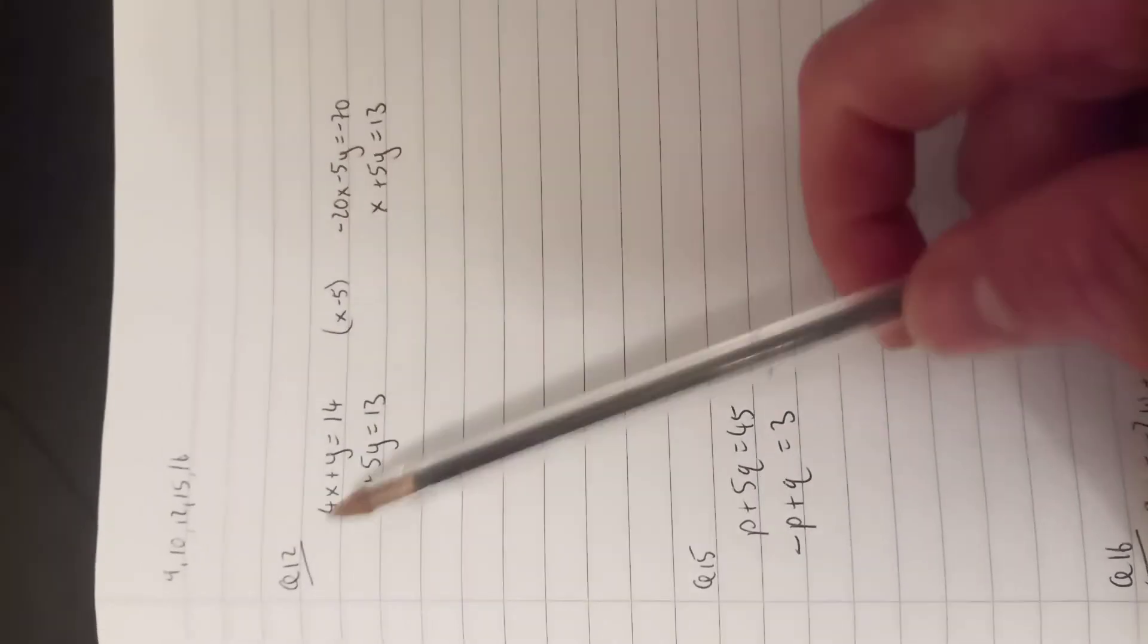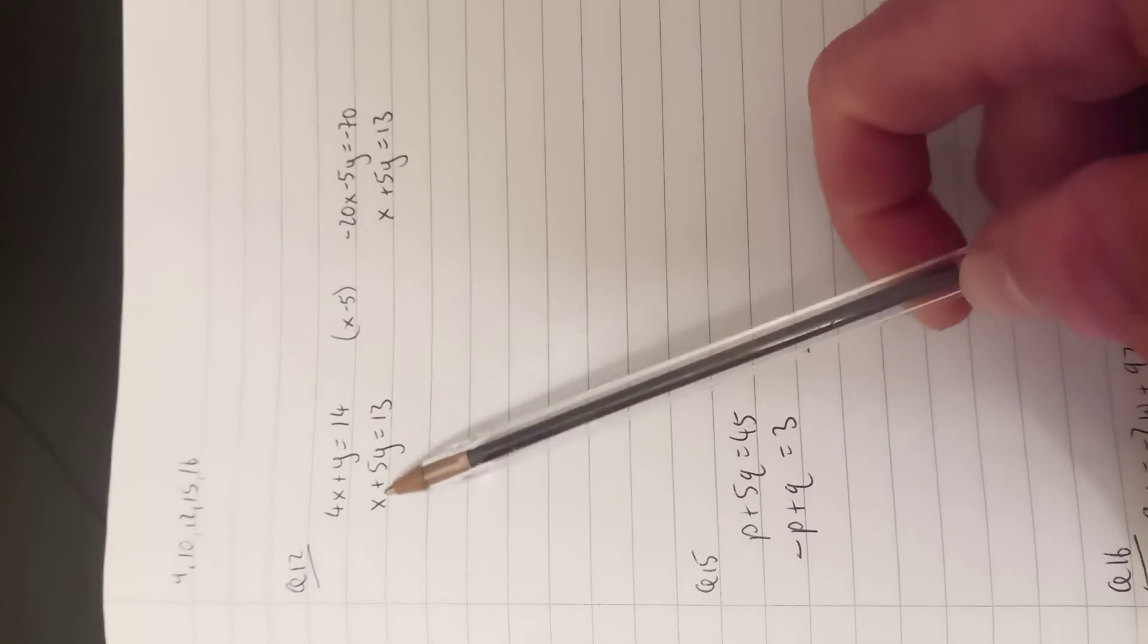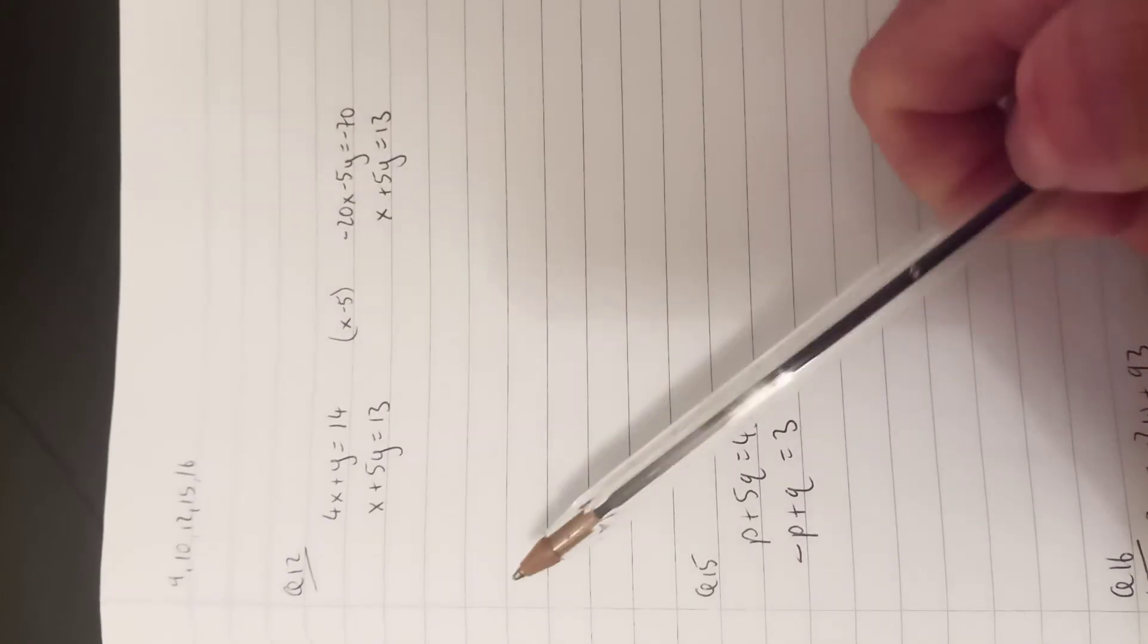Let's start with question 12. We'll solve the simultaneous equations: 4x plus y equals 14 and x plus 5y equals 13.